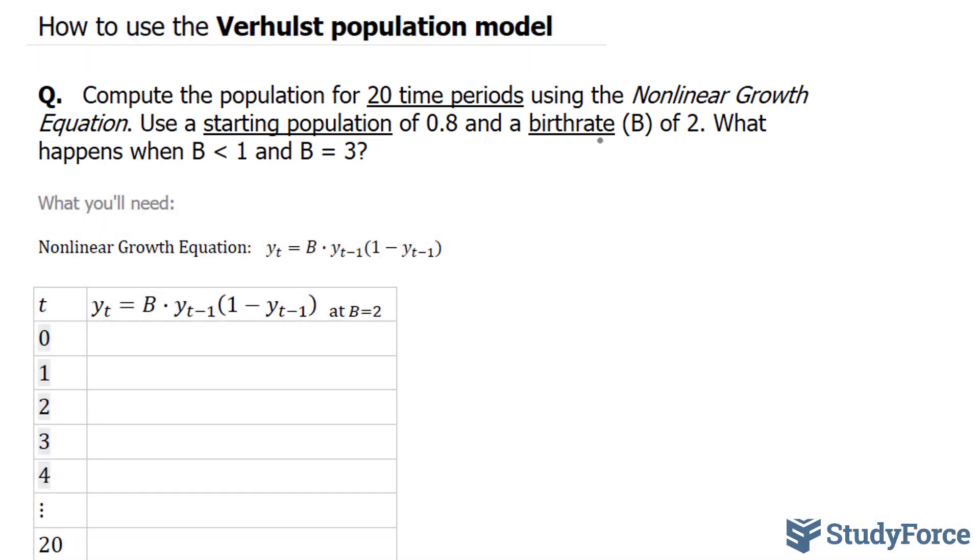We'll start off by finding out what happens when b is equal to 2, and the formula that we'll be using is shown right here. We know that at the beginning, there's a starting population of 0.8, so I'm going to write down 0.8 here.